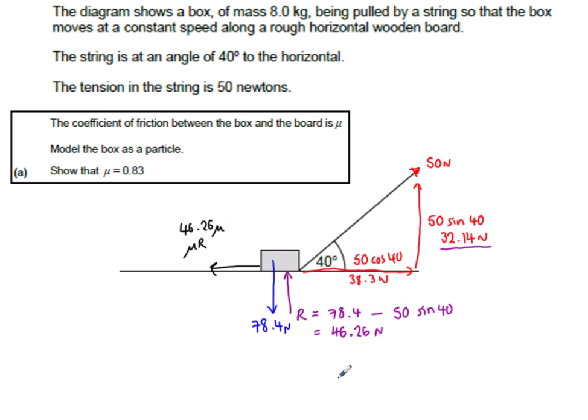We've got to show that mu is 0.83. So what we've got here is a friction, just resisting the motion of the string is mu R. And we can put that in as 46.26 mu. So there's all my forces. I've sorted out my verticals, because I found R. I need to sort out my horizontals now. The box is moving at a constant speed, so there's no acceleration. If there's no acceleration, it means that we are in equilibrium. So that 38.3, the 50 cos 40, must be equal to the friction, which is 46.26 mu, and that gives you mu is 0.83.